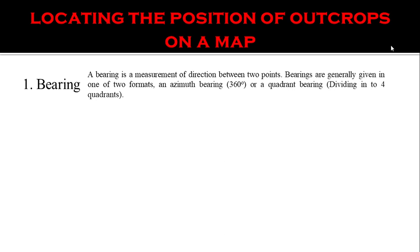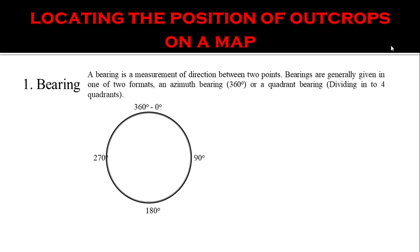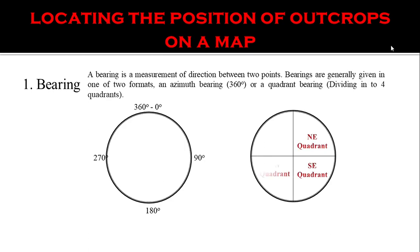The very first method is bearing. Bearing is the measure of direction between two points — the first one being the known point and the next one being the unknown point. Bearing can be done in two formats. The first is azimuth bearing, which uses the whole circle bearing — degrees from 0 to 360. The next is quadrant bearing, in which we divide the area into four quadrants: north-east, south-west, south-east, and north-west. In quadrant bearing, we use the direction as well as the degree together.